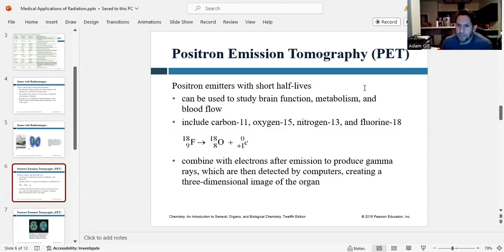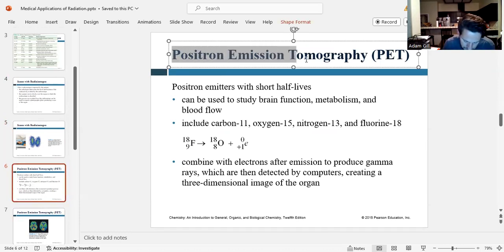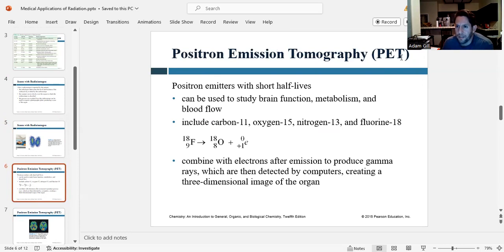So the first type of imaging we're going to talk about is positron emission tomography, abbreviated PET or PET scans. So a lot of you probably heard of PET scans. That's what it stands for. Positron emitters with short half-lives are used, and they can be used to study brain function, metabolism, blood flow.